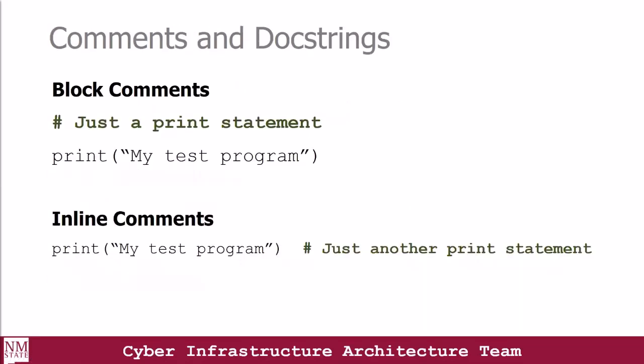Most of the time, when your program or code base becomes bigger, it becomes more complicated and difficult to read and maintain. For these reasons, it's always a good practice to put some documentation or notes into your code. These notes are known as comments. Comments begin with a hash or pound sign followed by a space and then the comment. Block comments are used to explain the code that follows, and the code being explained should be on the next line after the comment.